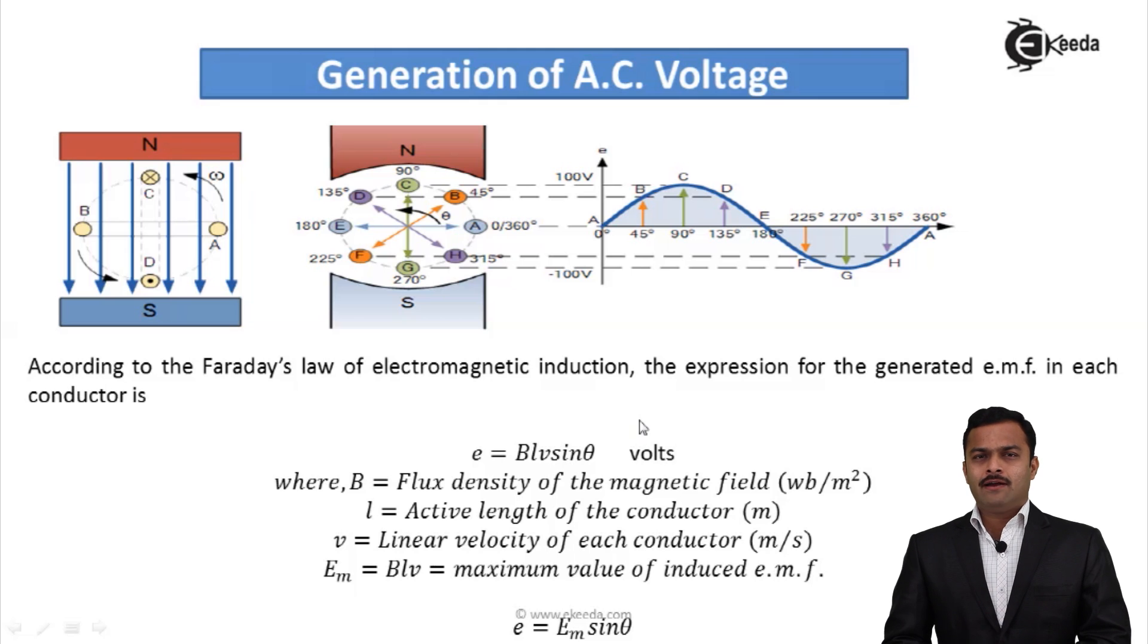So I will get an equation E = BLV sin θ volts, where B is flux density of the magnetic field given by weber per meter squared.